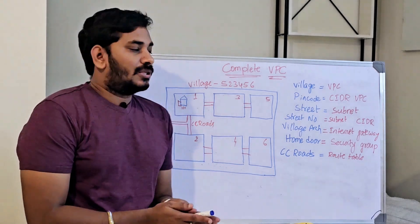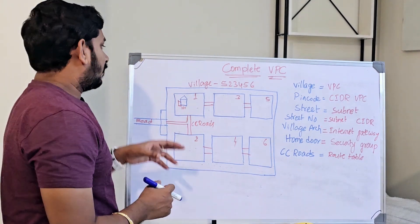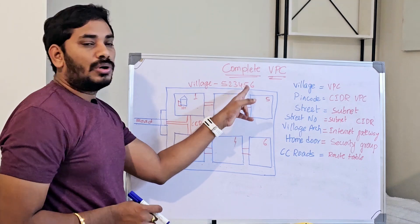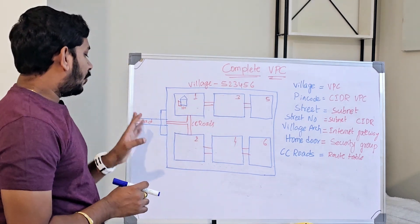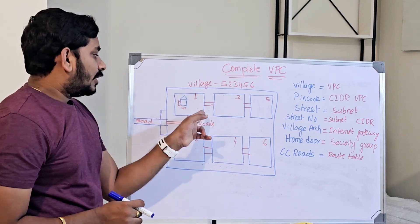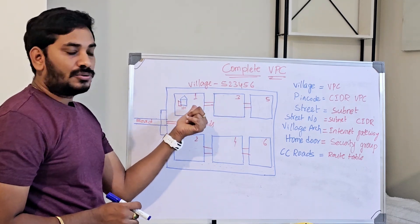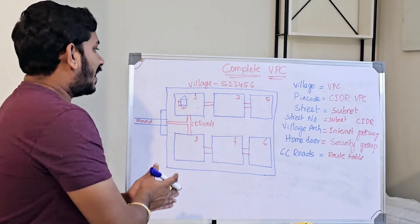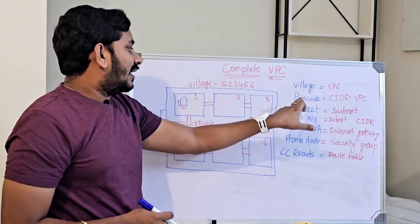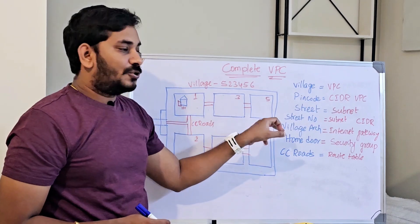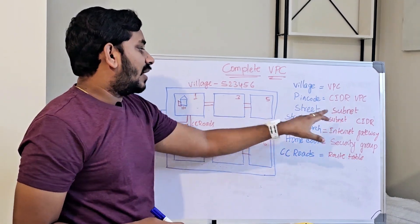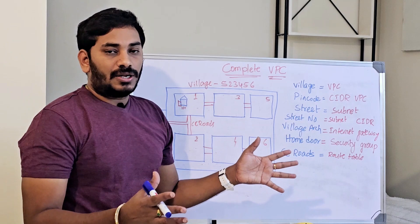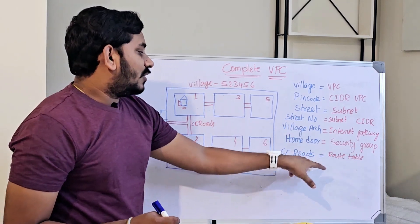Let's recap. In the last video, I compared the village to a VPC. We have a PIN code here. We compare this to the village — there are main roads. In this village there are streets, house numbers, and doors. So you will see CC roads. Comparing to VPC: the PIN code is VPC CIDR, the street is a subnet, the street number is a subnet CIDR, the village arch is the internet gateway, the home is a security group, and CC roads are route tables.